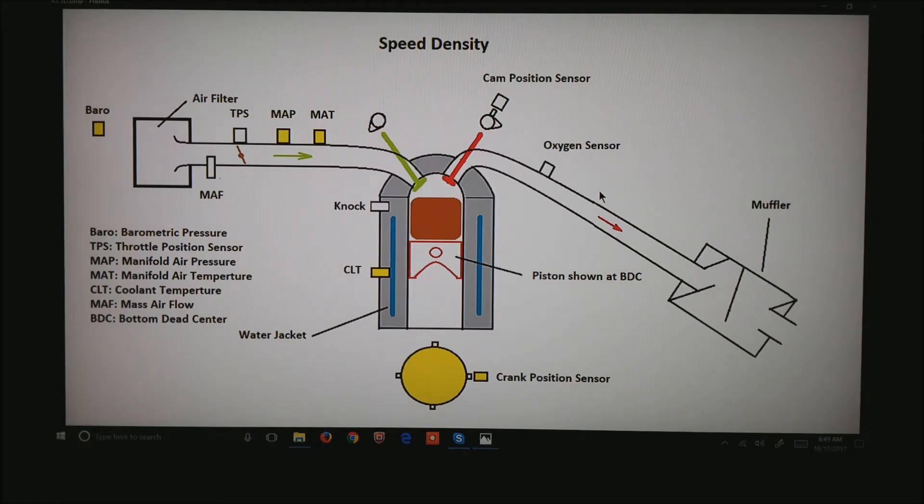Barrow, MAP manifold air pressure or manifold absolute pressure, and the manifold air temperature. Sometimes intake air temperature is what it's called. Coolant for, again, warm-up, and the crank position sensor down at the bottom.